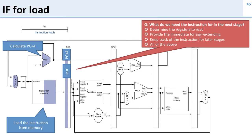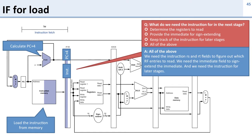Why do we need the instruction in the next stage? The answer is all of the above. We need the instruction's RS and RT fields to figure out what registers to read in the next stage. We need the immediate value so we can sign extend it. And in later stages we need the instruction information to know what ALU op we're going to do, whether we should take a branch, or read memory — so we need all of this data later on.